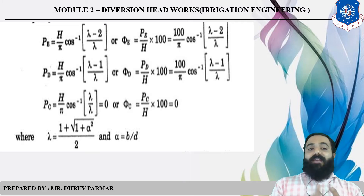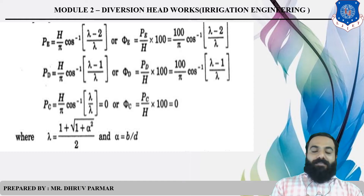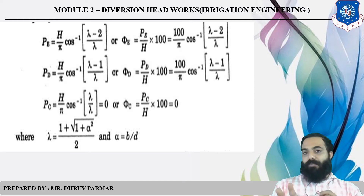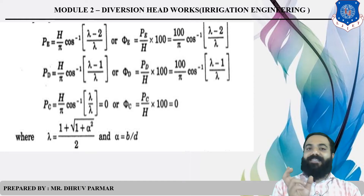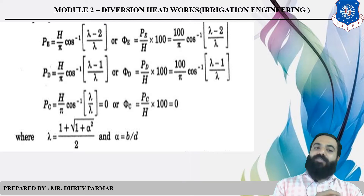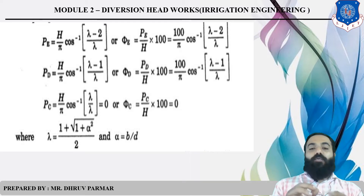You cannot find PC in the downstream section because PC = 0, meaning the uplift pressure at point C is zero.